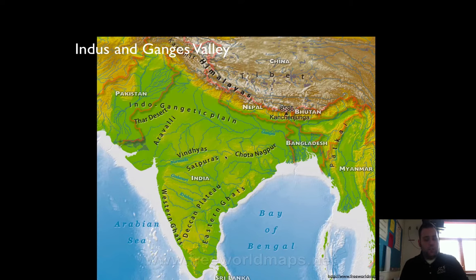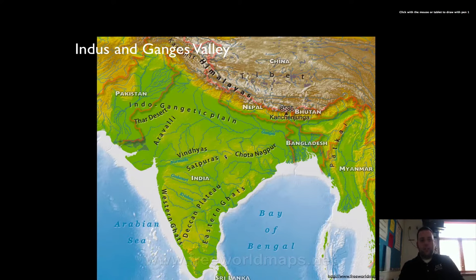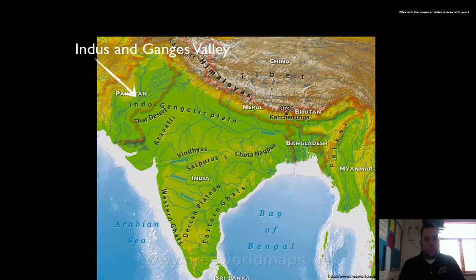The first thing we need to know about is where are the Indus and Ganges river valleys. These are where the two civilizations kind of start in this area. The Indus river valley is actually in modern day Pakistan.